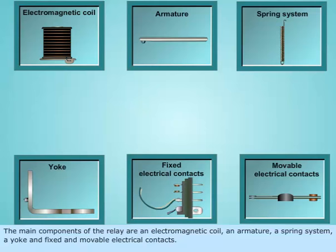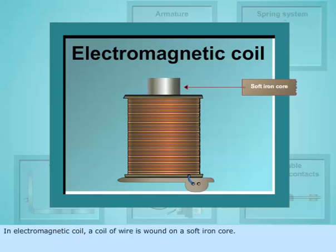In electromagnetic coil, a coil of wire is wound on a soft iron core. It is used to generate the magnetic field through the soft iron core.